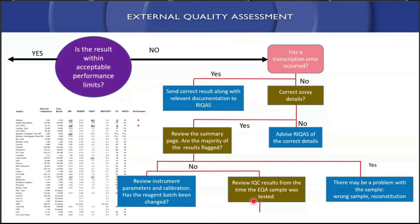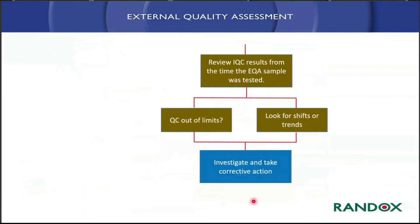Check that there were no issues with your internal QC at the same time. Look at whether QC limits are out of range, or look for the development of shifts or trends. What we're really looking for is to investigate and take corrective actions. When doing a like-for-like comparison with your internal QC, look not only in terms of standard deviations but also in terms of percentage deviation. Very often when we compare internal QC to external quality assessments, the performance is actually very similar, but because of a large range in the internal QC, that's not always noticeable.